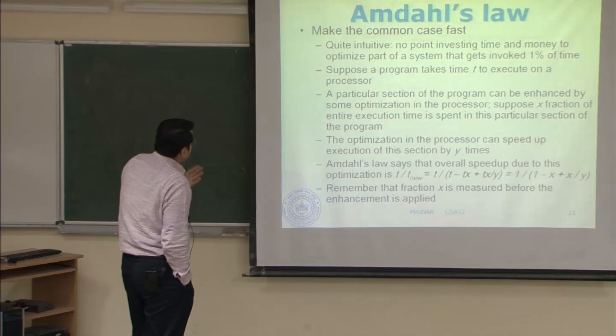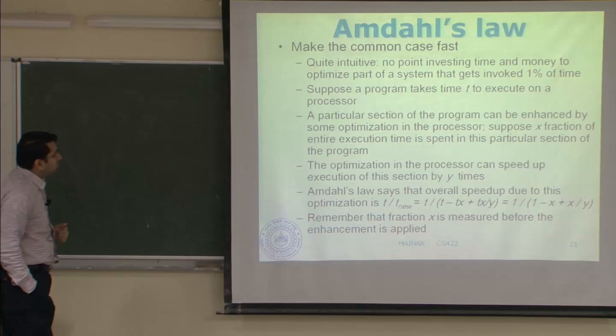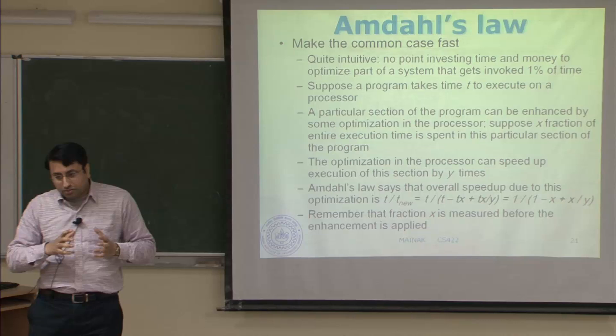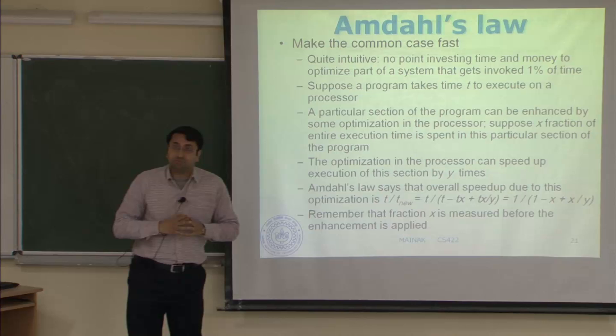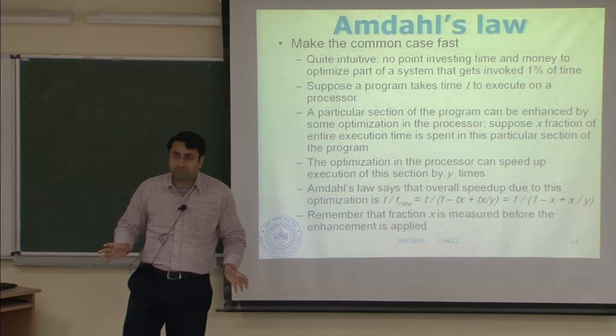Amdahl's law essentially says: make the common case fast. It is quite intuitive — there is no point investing time and money to optimize a part of a system that is involved only one percent of the time. You should really be optimizing parts of a program that require the maximum amount of time to execute. For example, if you have a function that is involved 90% of the time, you better invest your time and money to optimize that function.